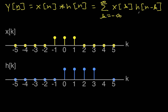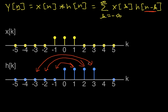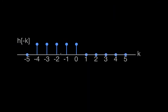The first thing we need to do: h of n minus k is equivalent, when talking about h of k, to flipping h of k about the point n equals zero. So we'll exchange these pairs of values, and everything else is already zero. Then we shift it to the right by n if n is positive, and to the left by n if n is negative. When we flip h of k about the point n equals zero, we get something that looks like this, and then for different values of n we shift this to the right or left.